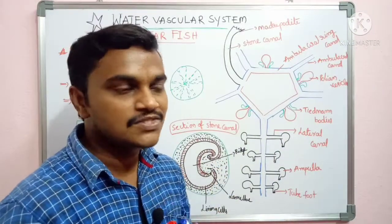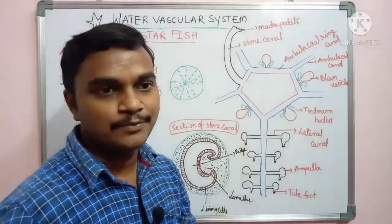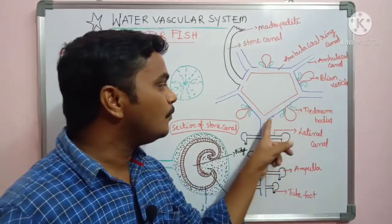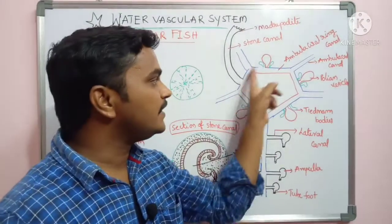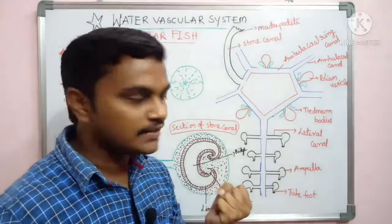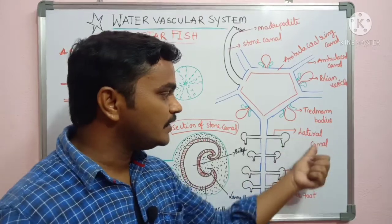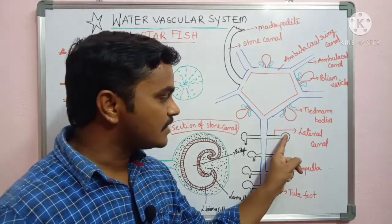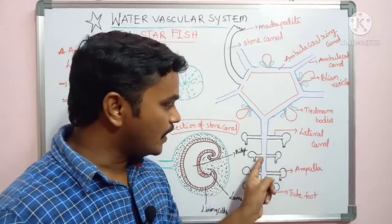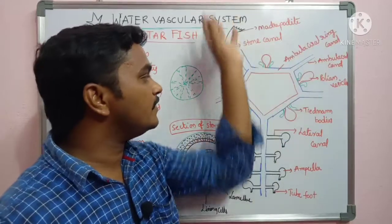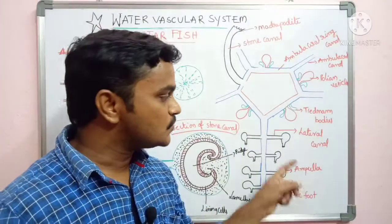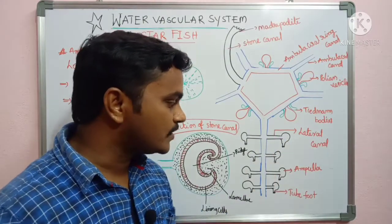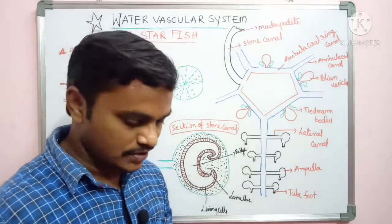If you see the water vascular system, the parts are: first, the madriporite — from the madriporite water enters into the stone canal; from the stone canal water enters into the ambulacral ring; from the ring canal all radial canals receive the water; those radial canals transmit water to the lateral canals; every lateral canal has two branches that open into the tube feet — the ampulla and sucker. Every radial arm transmits water to the tube feet. Tube feet is plural; tube foot is singular.